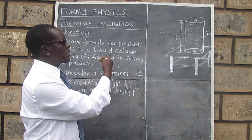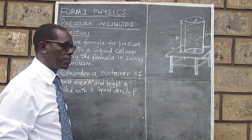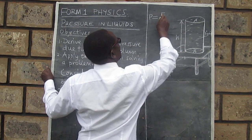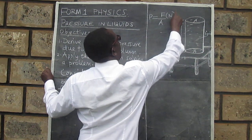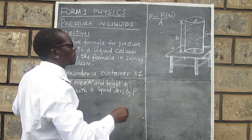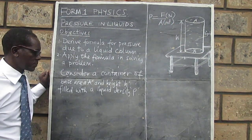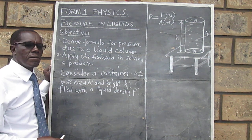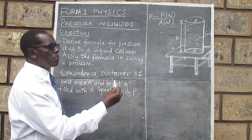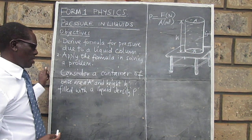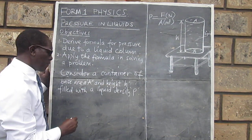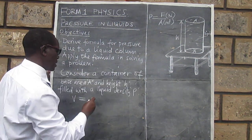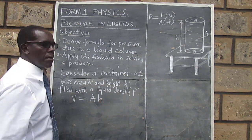We will base our derivation on the formula for pressure which we got in the previous lesson. We found that pressure is given by force divided by area in square meters. So we are going to base our derivation on that formula. The first thing we are going to do is find the volume of liquid in the container. Since this is a cylinder, the volume of the liquid is given by base area times height, so we write it as A multiplied by H.